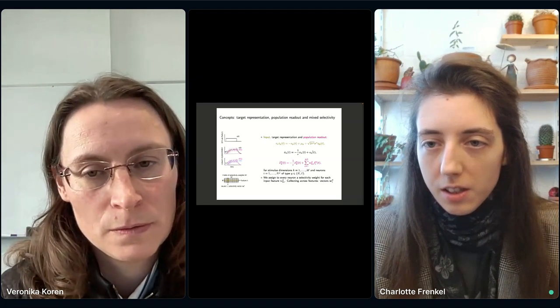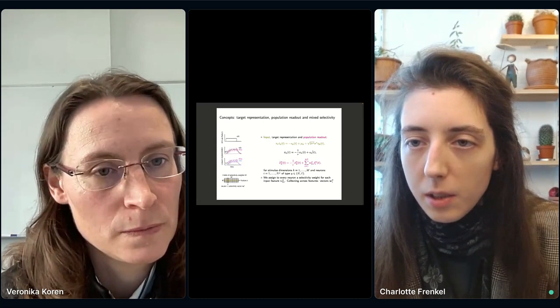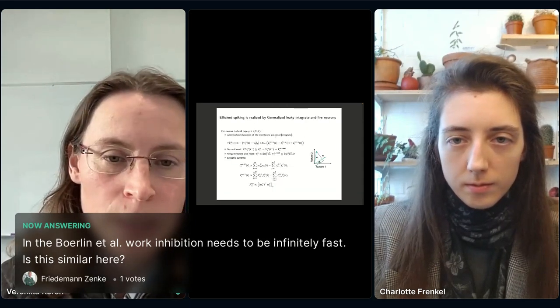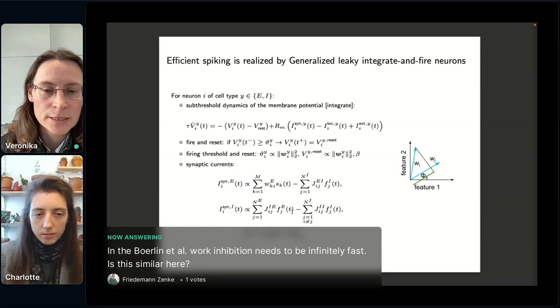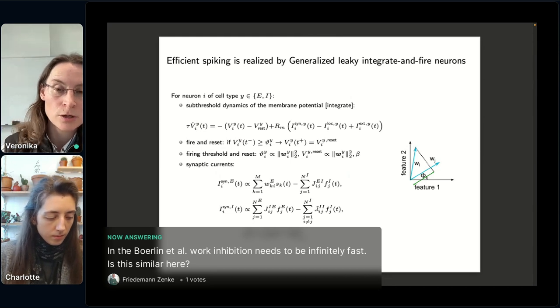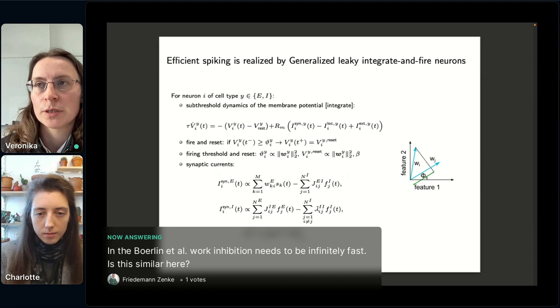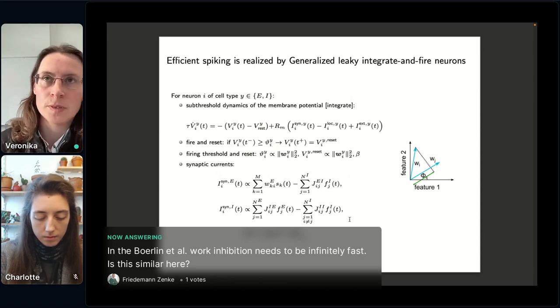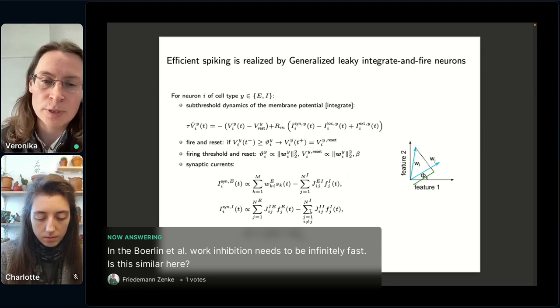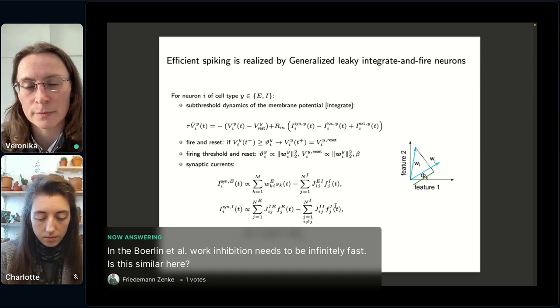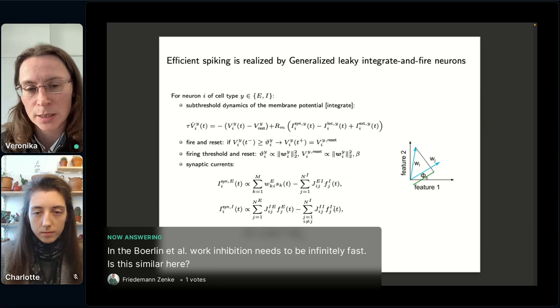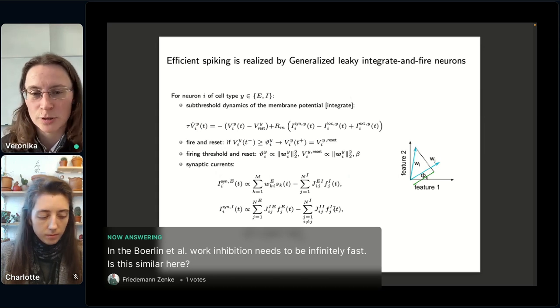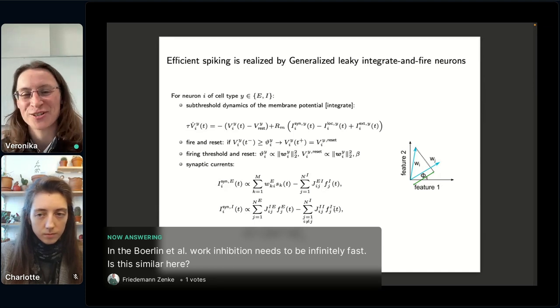The second question, also from Friedman Zenke. In Berlin et al. work, inhibition needs to be infinitely fast. Is this similar here? So, yeah, here we actually have this fast synapses. Yeah, so these are spike trains. In contrast to the Berlin paper, however, they assumed that they implemented this network a little bit differently. So, yeah, so here our implementation is closer to biology, but we nevertheless still have this very fast interaction across neurons. But our current work is also extending these to realistic synaptic time constants and, yeah, the network still works fine. So it's, yeah, again, an extension of this current work.